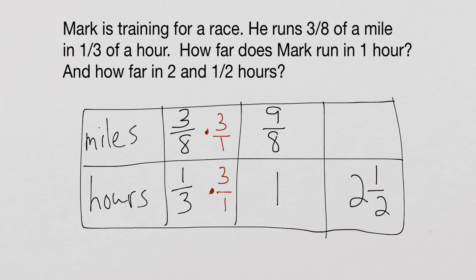And luckily for us, now that we have one hour, we can just multiply one times anything we want. So I'm going to multiply it here by five over two. Now, five over two, you should know that is two and a half, right? I made it an improper fraction because I want to multiply the top by the same thing, and I need it to be a fraction in order to multiply.